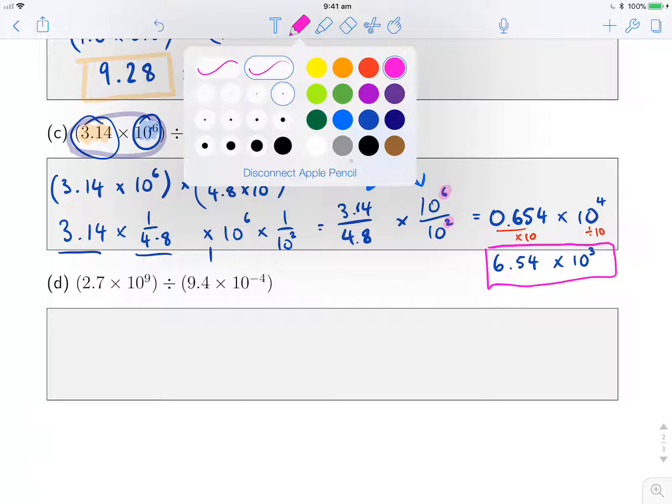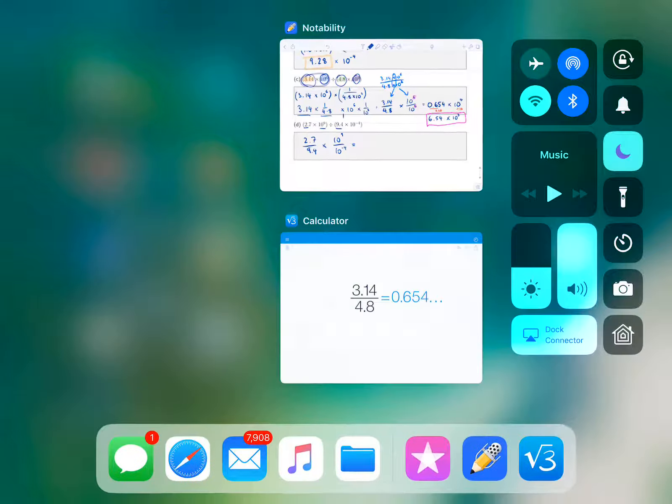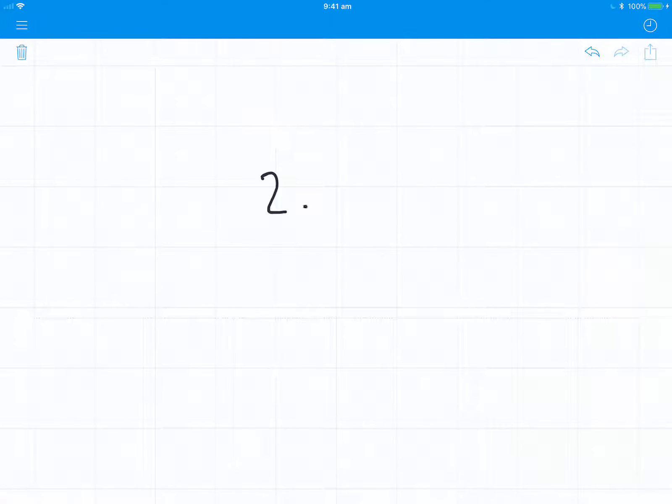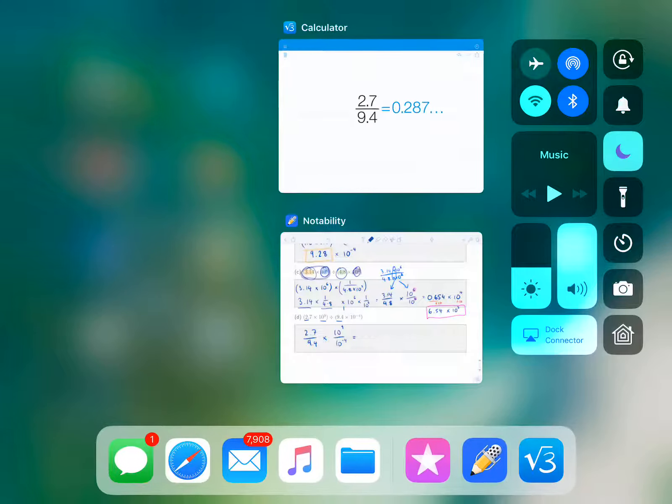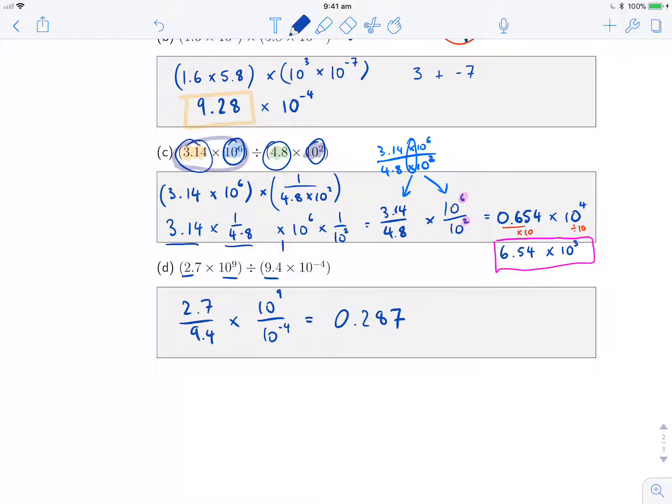So for this last one, we're going to do exactly the same thing. We take the first number, divide it by the second number, 2.7 divided by 9.4, multiplied by 10 to the 9, first number, over 10 to the negative 4. So 2.7 divided by 9.4 gives us 0.287. It may not be rounding those numbers exactly, but for what we're doing here, it's okay.